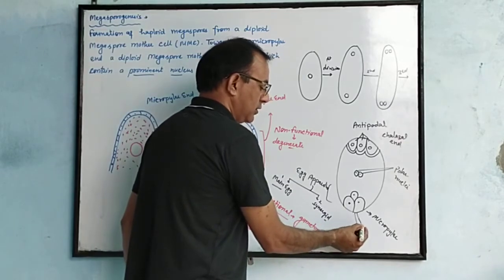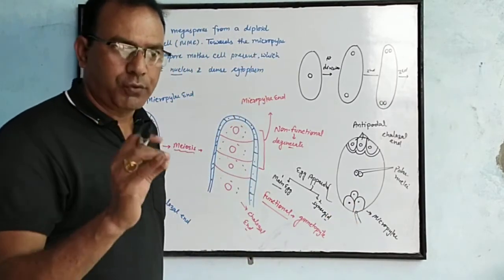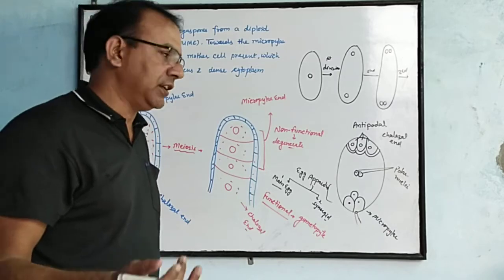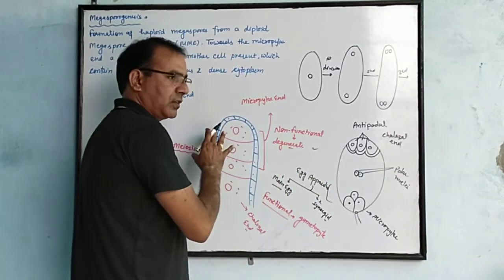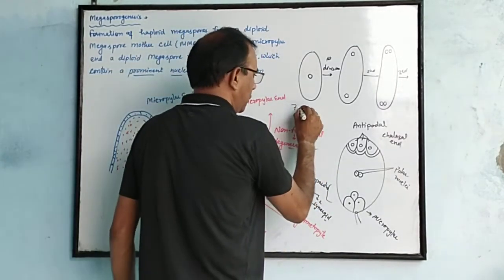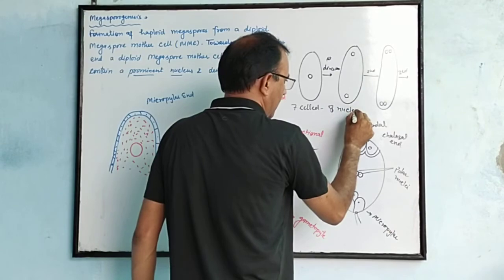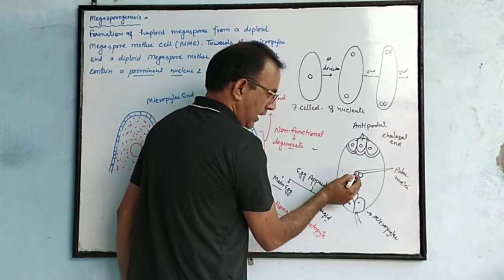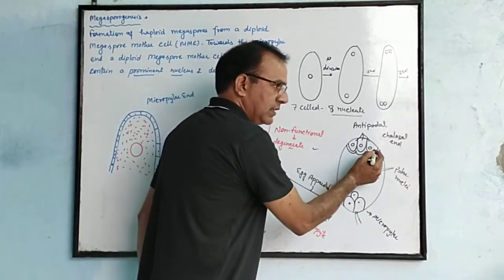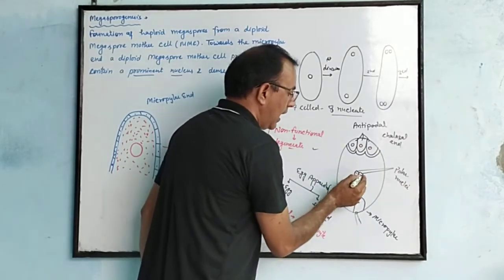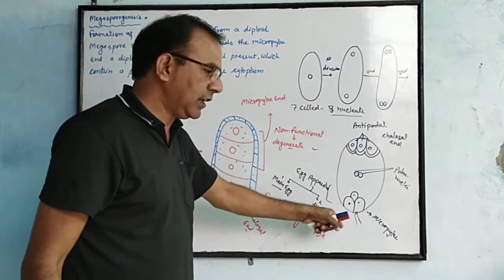The pollen tube enters through the micropyle, which is a small pore in the ovule. This overall structure is a seven-celled, eight-nucleate structure. There are eight nuclei because: three (egg apparatus) + three (antipodal) + two (polar nuclei) = eight. But there are only seven cells because the two polar nuclei share a single cell, giving seven cells total.